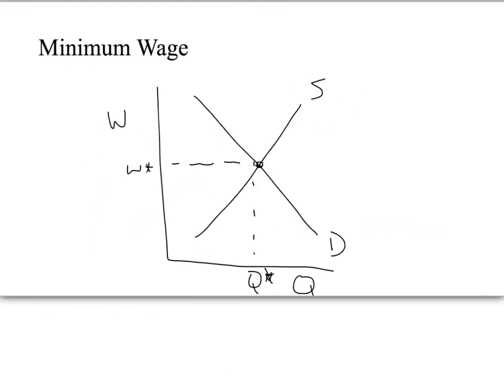Minimum wage is a type of disequilibrium in the market created by the government forcing employers and employees to accept a higher wage. Because it's a minimum wage, it's a price floor. Recall that price floors create a surplus, and price floors are drawn above equilibrium. So here's where the minimum wage would be.